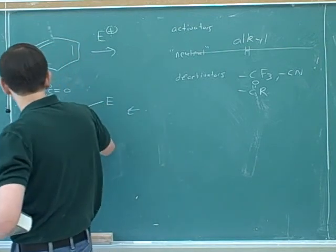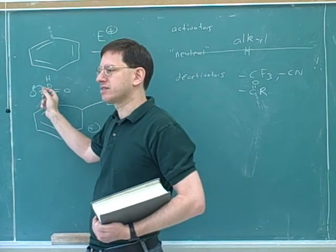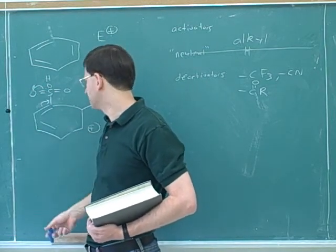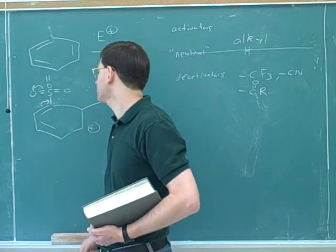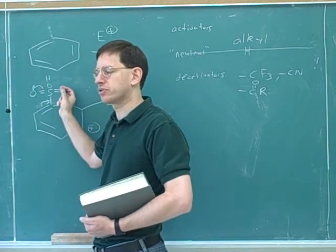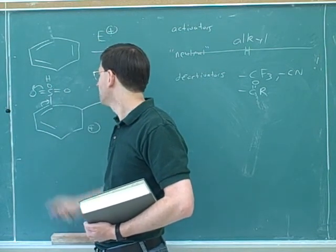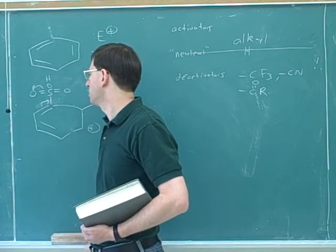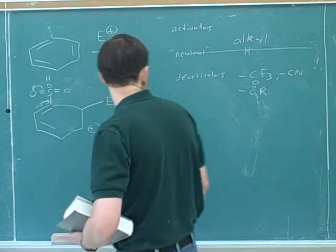So electron withdrawing by resonance. Again, we can put in a similar argument. The oxygen is more electronegative than the sulfur. The oxygen tends to pull the pi bond towards itself, and there's a resonance structure that puts an extra positive charge here. We can also have this oxygen pull the electrons towards itself. So there's another resonance structure where this pi bond moves towards this oxygen, pulling electrons out of the benzene ring. And also, because all these elements are so electronegative, there's also induction effects. So by resonance and induction, this is electron withdrawing.